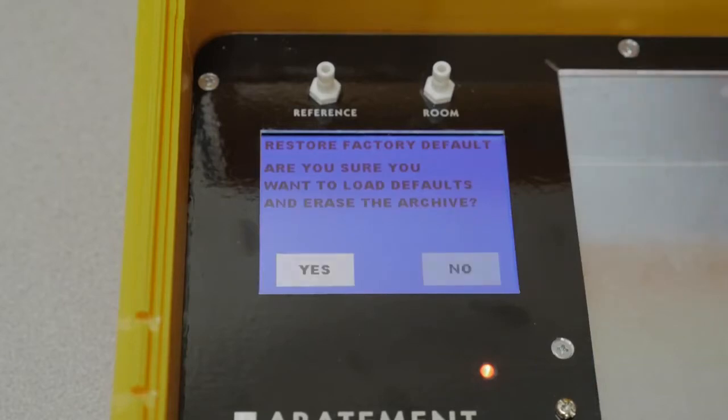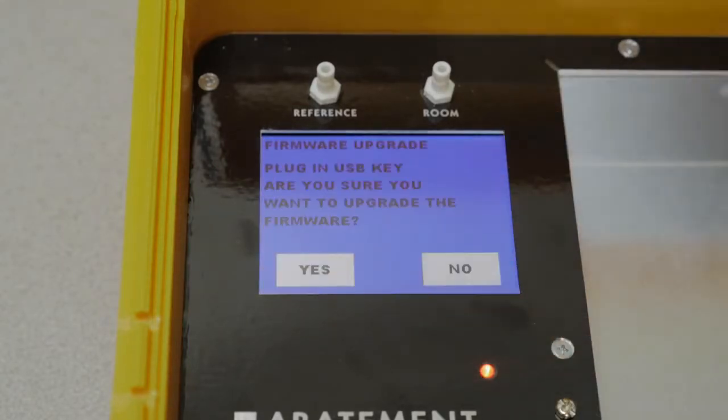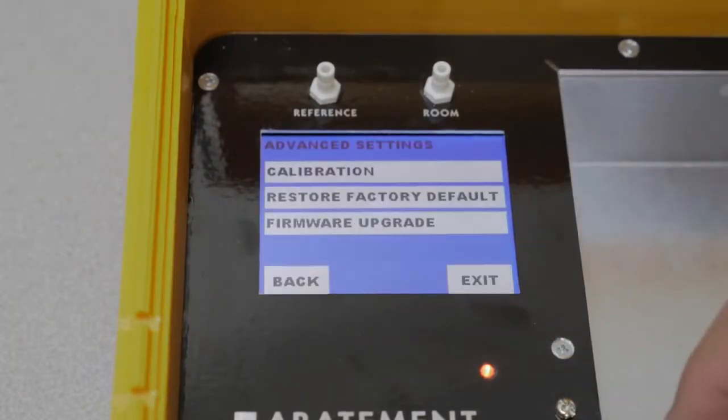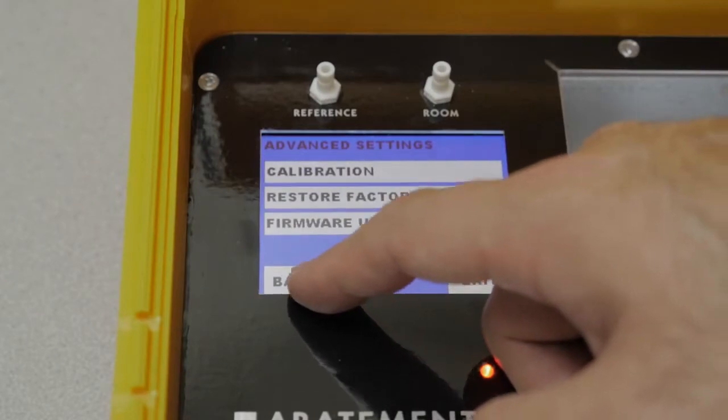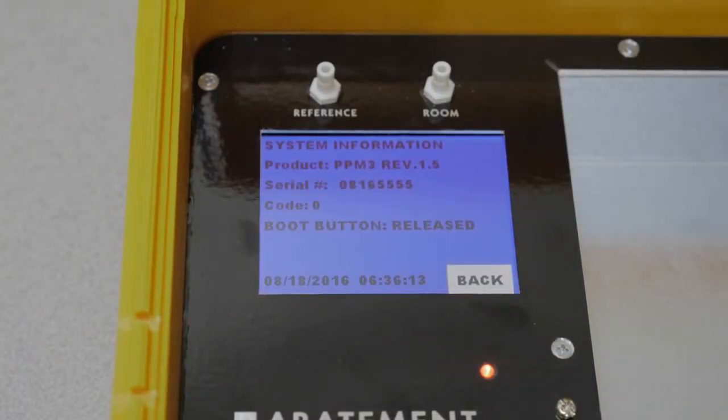Restore factory default restores all the settings to the factory default. Firmware upgrade allows the device firmware to be upgraded via USB. Check the system information screen to verify the software version.